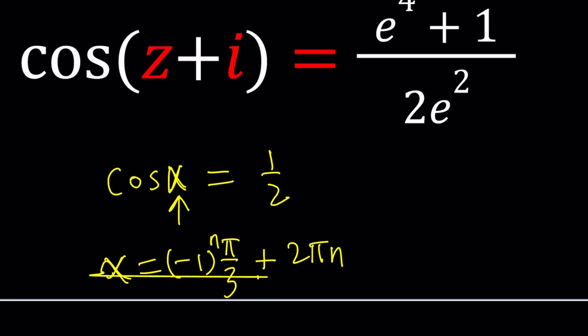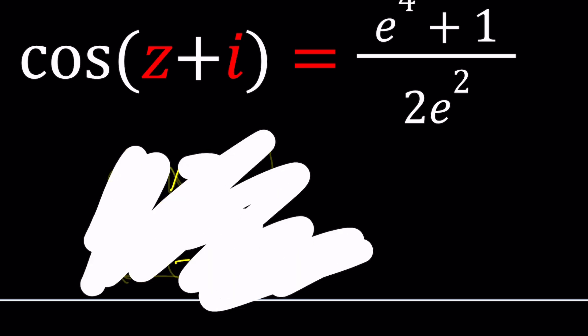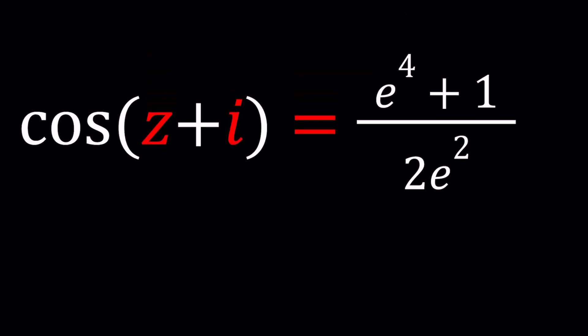You could find the solution easily but with the complex case things are more complex. Things are very different, right? Because you can't find an angle whose cosine is e to the power four plus one divided by two e squared. That's probably a number that is greater than one anyway so we're not looking for real solutions plus it's not a special value. So what are we going to do? We're stuck? No.